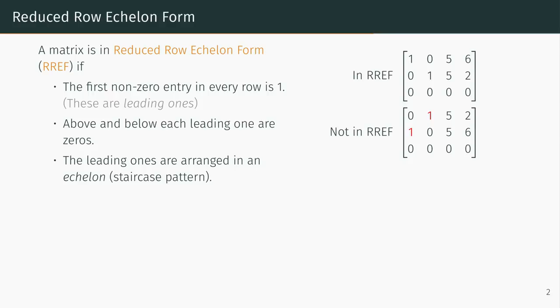Let's consider two more examples. In this next matrix, we notice that the first non-zero entry in row 2 is a 4. A 4 is not a 1, so this matrix is not in reduced row echelon form.